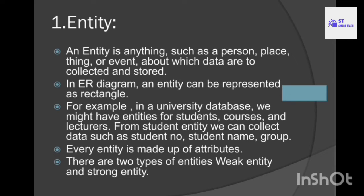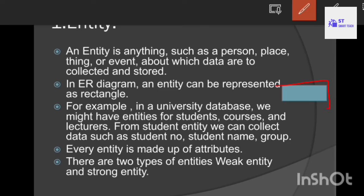An entity must have some properties. For example, a car is an entity with properties such as car color, car price, and car model. In an ER diagram, an entity can be represented as a rectangle.